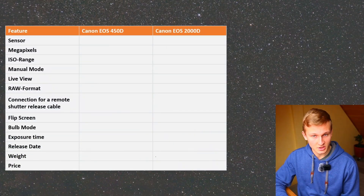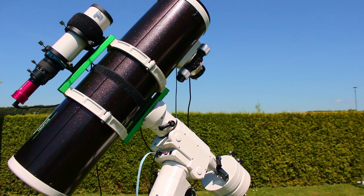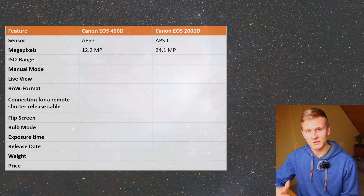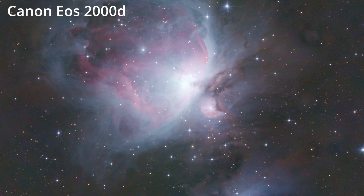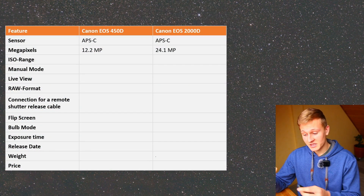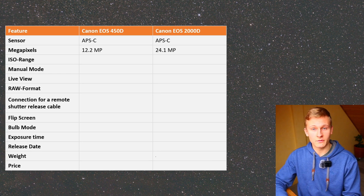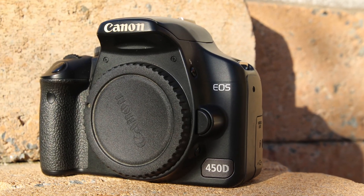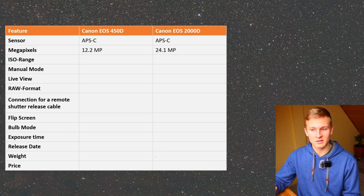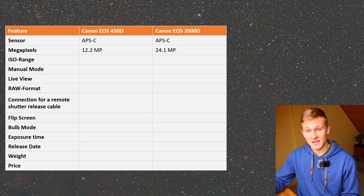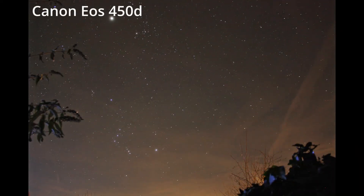The very first aspect I would like to talk about is the sensor, which is very important for deep sky astrophotography. Both cameras have an APS-C sensor, but there is a difference in megapixels. The Canon EOS 450D has 12.2 megapixels and the Canon EOS 2000D has 24.1 megapixels. This matters because in astrophotography we typically crop our images to the area where stars are sharpest, so having more megapixels means less detail is lost when cropping. Therefore the Canon EOS 2000D sensor is a bit better.